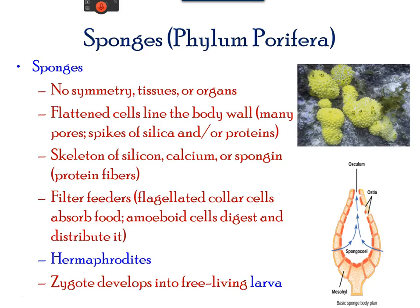Sponges are animals of the phylum Porifera. These multicellulars have no symmetry and generally a body full of pores and channels to circulate water. They do not have a nervous, digestive, or circulatory system, and are generally filter feeders that absorb food. They are also hermaphrodites, meaning no male and female distinction, but they do develop into free-living larvae.